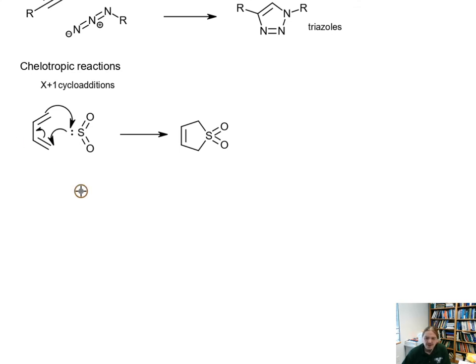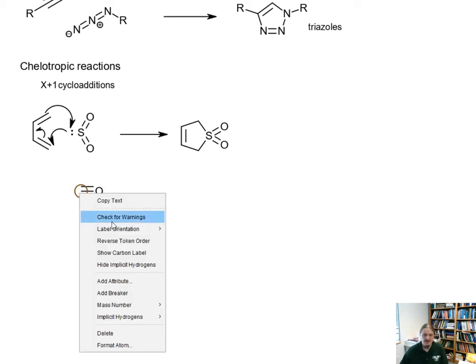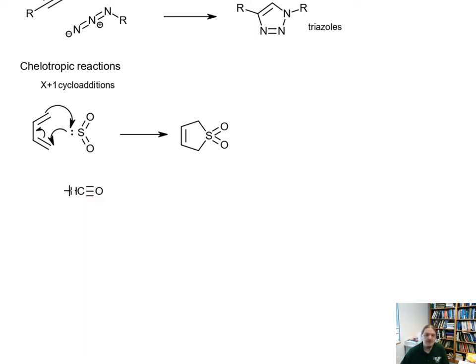Sulfur dioxide can actually react with things like 1,3-butadiene and form these cyclic sulfones. Other chelotropic compounds are things like carbon monoxide. Carbon monoxide has a carbon atom with a lone pair. This is one of the two resonant structures for carbon monoxide. But carbon monoxide can be made to do reactions like this. That's pretty cool. Many of the carbon monoxide reactions get catalyzed by transition metals.